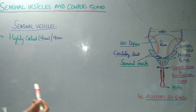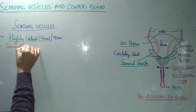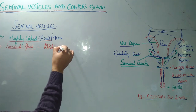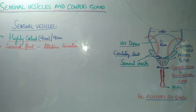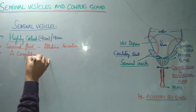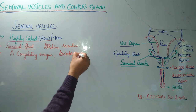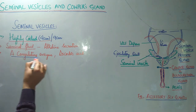The seminal vesicles secrete a secretion which we call seminal fluid or seminal secretion. This seminal secretion is alkaline in nature. It forms a very important component of the semen. In this seminal fluid there is a coagulating enzyme, and ascorbic acid is also present in the semen. Both the coagulating enzyme and ascorbic acid are contributed by the seminal vesicles.